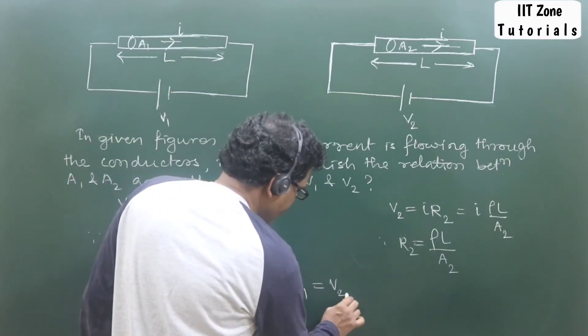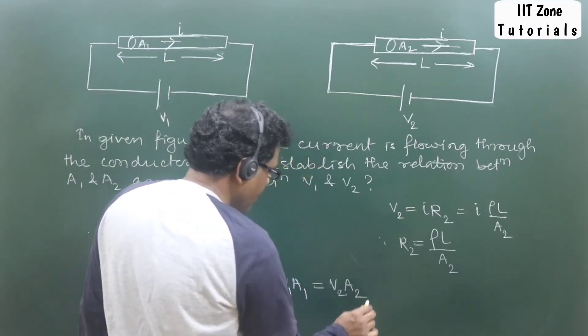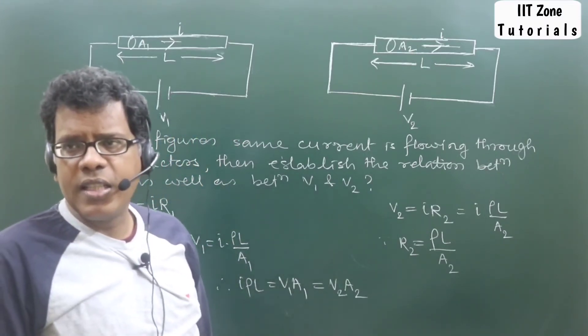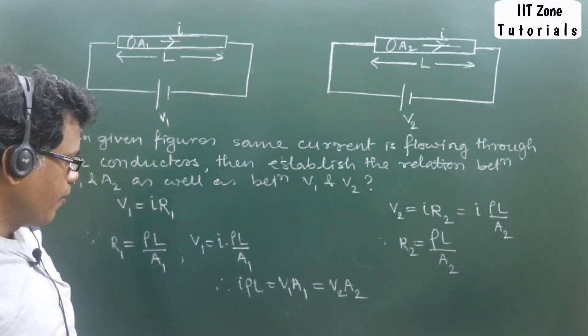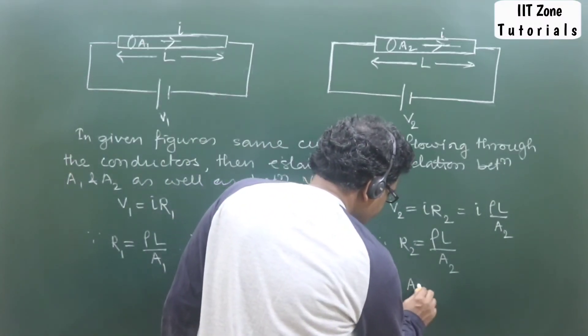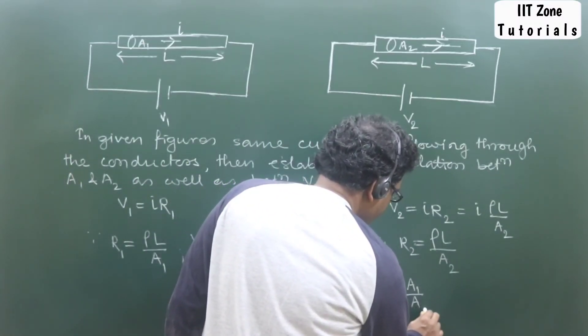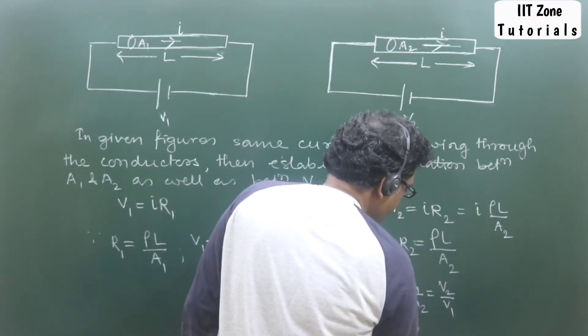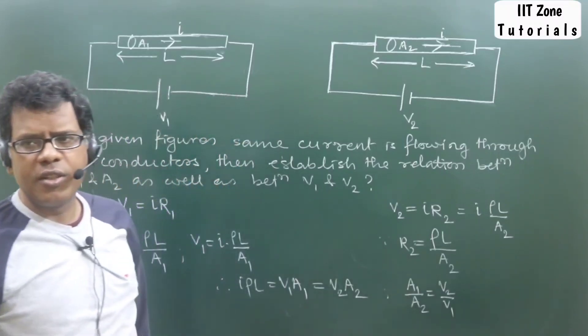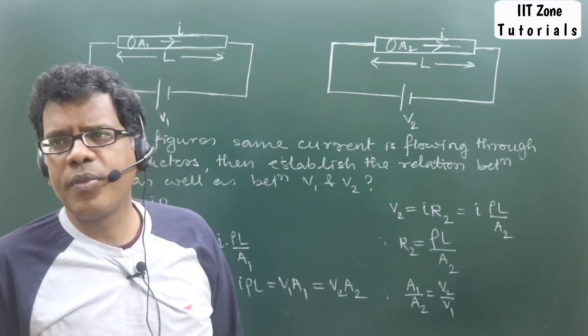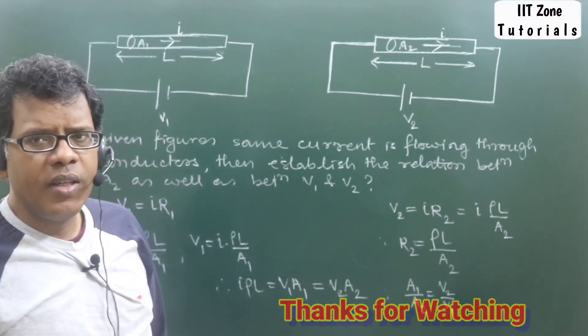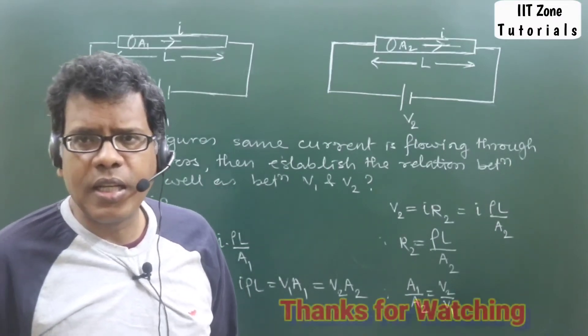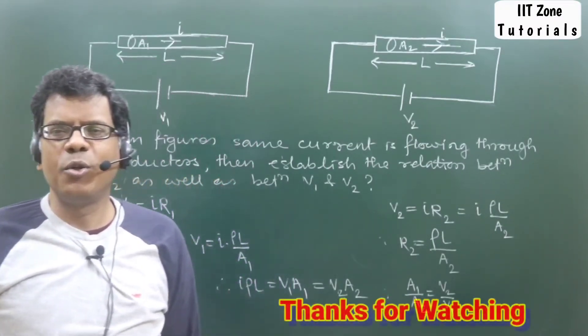That means, in order to form the relation, we can say the ratio of area of cross-section is inversely proportional to the ratio of potential difference of the applied source. Yes or no? Can we write down the result as A1/A2 is coming equal to V2/V1?